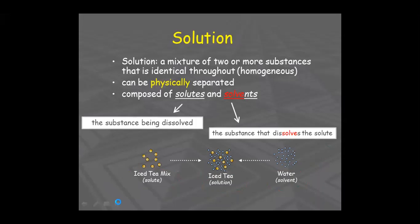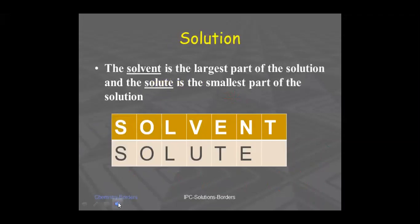The main parts of a solution are solvent and solute — only two parts. The solvent is the largest part of the solution: whatever you take in large amount is the solvent. The solute is the smallest part of the solution: whatever you take in small amount is the solute.